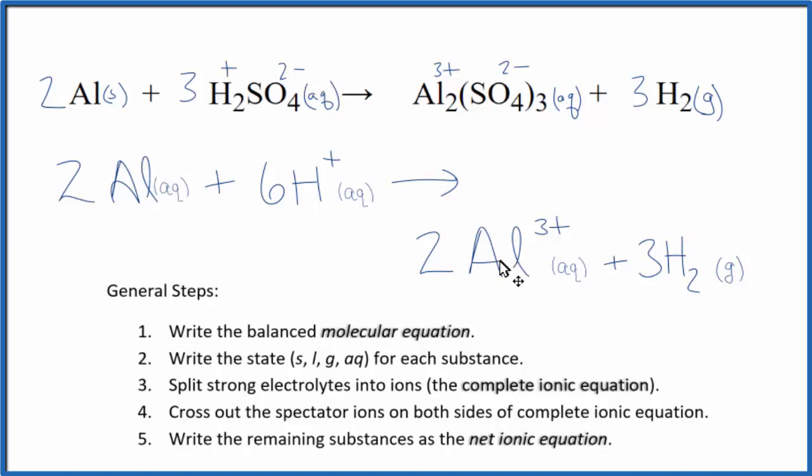You'll note we have two aluminum atoms, six hydrogen atoms here, three times two, six here. And if we look at charge, we have six positive charges here, two times three plus. That gives us a six plus. So atoms and charge are conserved in our balanced net ionic equation for Al plus H2SO4.